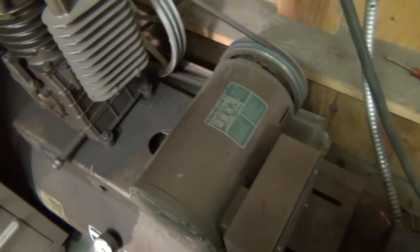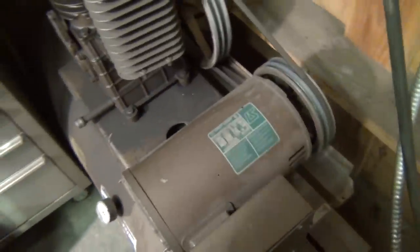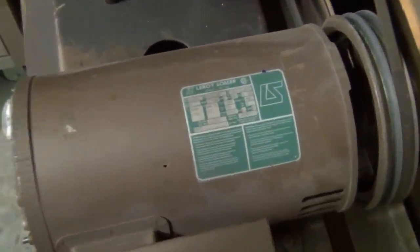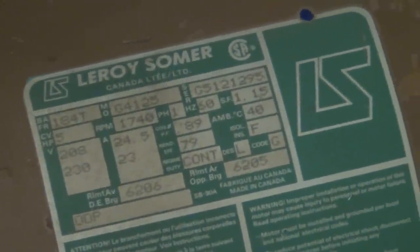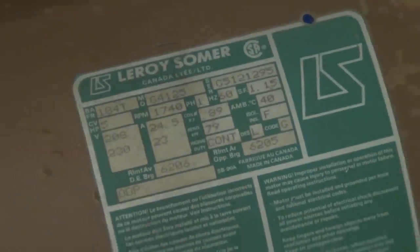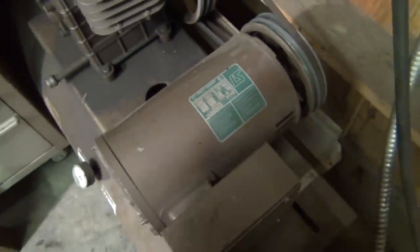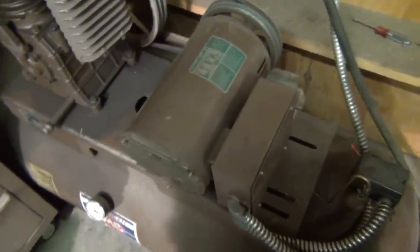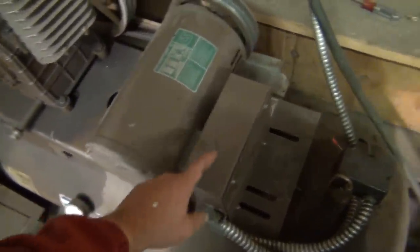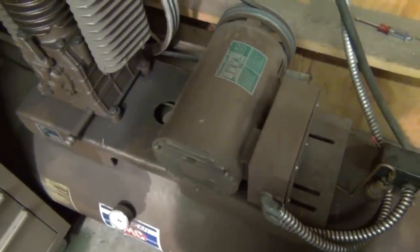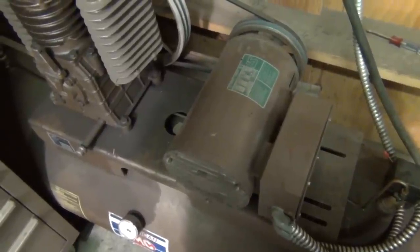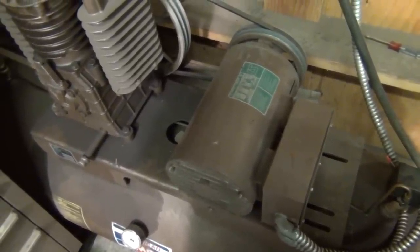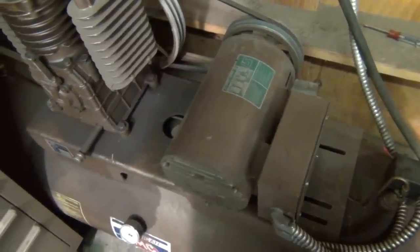So this is a single phase 5 horsepower 1800 RPM motor, and that's a real 5 horsepower, not the phony 5 peak horsepower you see on all the machines at the big box stores. And it's a 240 volt single phase motor, so that's actually a capacitor start and capacitor run motor. There's a couple of big capacitors in here and I suspect that just with my experience with electric motors that start capacitor is bad. So we'll go ahead and take that cover off and do some troubleshooting there.